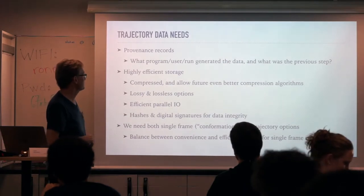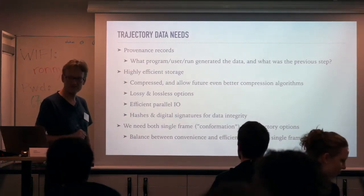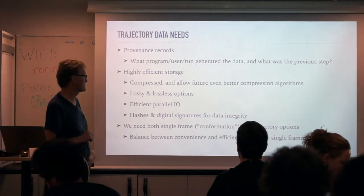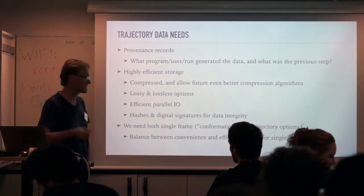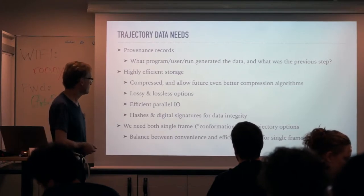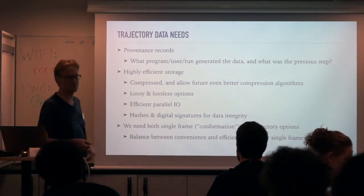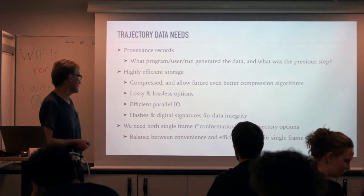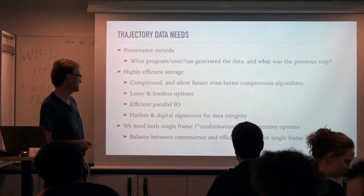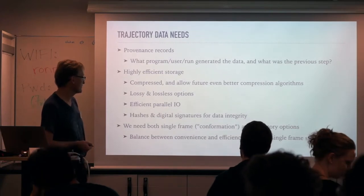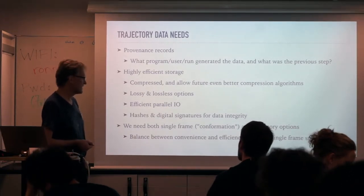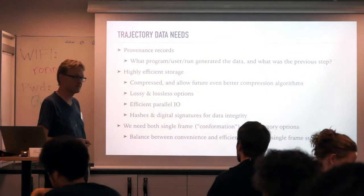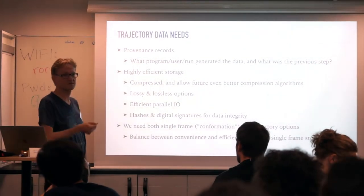The compromise for trajectory data is that efficiency beats readability here. This has to be very highly compressed. We also need to allow future even better compression algorithms, similar to video, where new compression algorithms keep coming as processors get faster. We certainly need lossless compression, but we also need lossy compression to save space. You need very efficient parallel IO as we're getting larger and larger machines. And I would argue we need some sort of hashes and digital signatures — partly to make sure you can verify the data, but also as storage grows, there will be random errors in data, and it's much better to know something is wrong because the hash does not match.